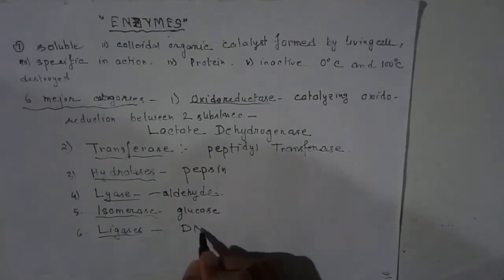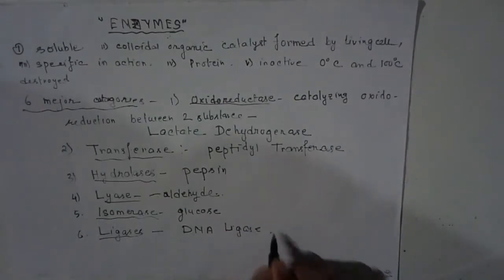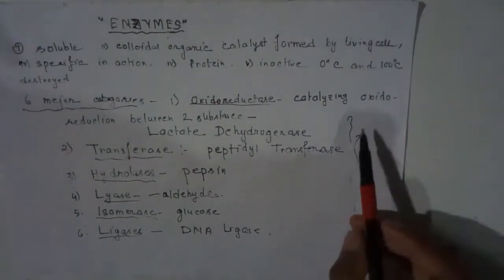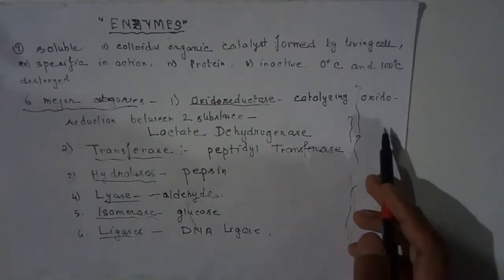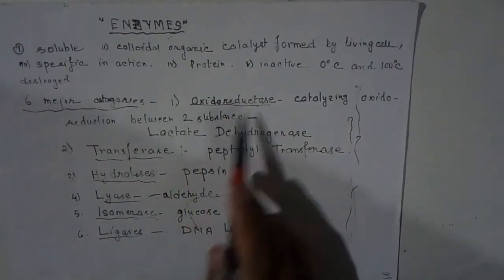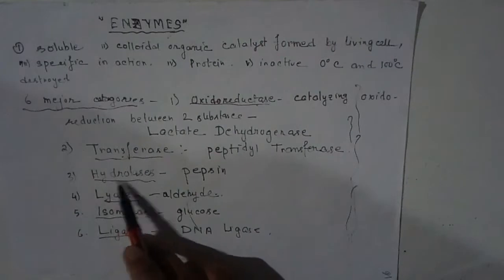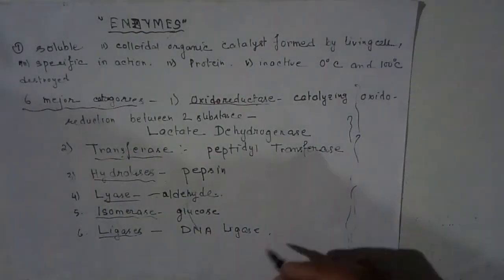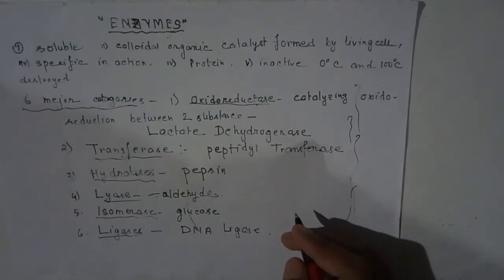So these are the six types of enzymes: oxidoreductase, transferase, hydrolases, lyases, isomerase, and ligases. Thank you for watching this video, and please subscribe to this channel.